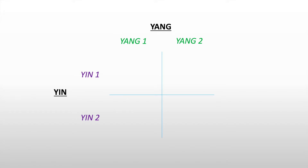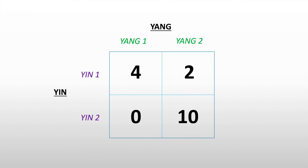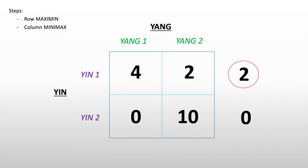Now let's try with another example. We have two players, Yin and Yang, and each one of them can have two different actions: Yin one and Yang two for Yang. This is our payoff table. Step number one, row maximin — find the minimum of each row. That's two and zero, and the maximum is two. Then we do column minimax — find the maximum of each column. That's four and ten, and the minimum between the two is four. We have different values, so we don't have a saddle point, meaning each one of the players can mix up their strategy.